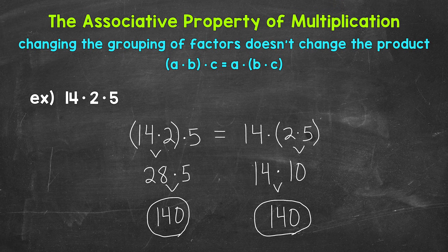So there you have it. There's an explanation of the associative property of multiplication. Remember, changing the grouping of factors, the numbers being multiplied, doesn't change the product, the answer.